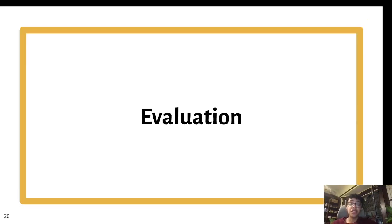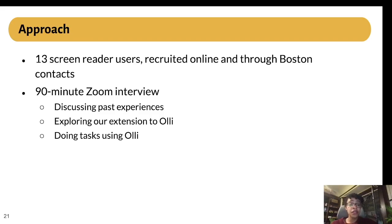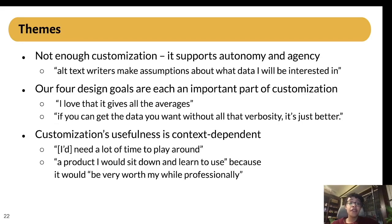Once we finalized a version of the design goals, the token parameters, and our implementation, we moved on to conducting an evaluation. For this evaluation, we interviewed 13 screen reader users, recruited partly online and partly through the Massachusetts blind and visually impaired user group. With each participant, we conducted a 90-minute Zoom interview. We spent part of the time discussing the participants' use of accessible visualizations and customization, part of the time having them explore OLLI and our extension to it, and part of the time asking them to complete specific tasks in OLLI. After finishing all the interviews, we conducted an open coding process on the transcripts and we identified three main themes.